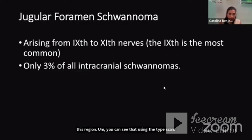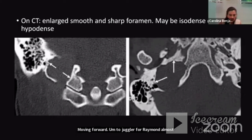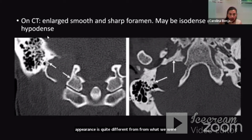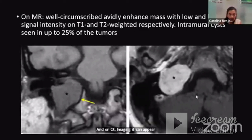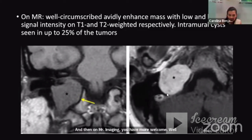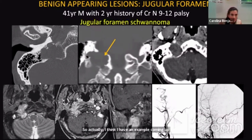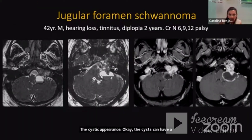Jugular foramen schwannomas most commonly arise from the ninth cranial nerve but can arise from any of the lower cranial nerves. Their appearance differs significantly from paragangliomas. On CT, rather than a moth-eaten appearance, you see an enlarged, smooth, sharp foramen — characteristic of a slow-growing schwannoma. CT appearance is isodense or hypodense. On MRI, they are well-circumscribed, often avidly enhancing, with low signal intensity on T1 and T2, and a very characteristic presence of intramural cysts that may show fluid-fluid levels.